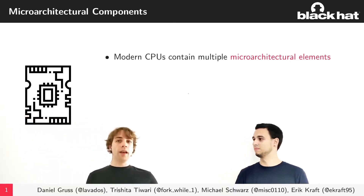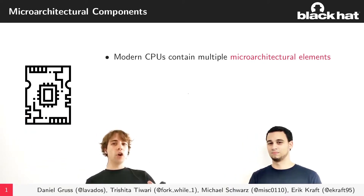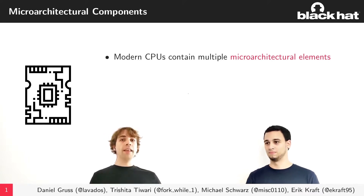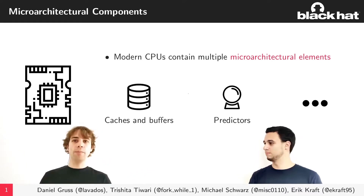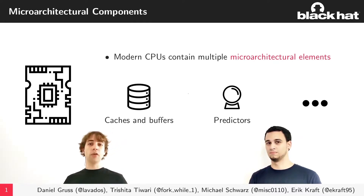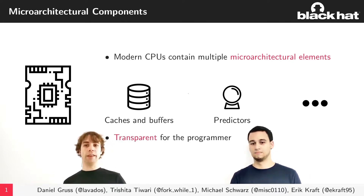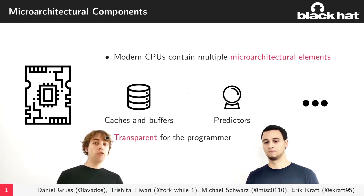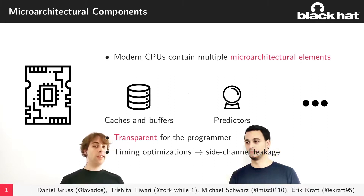We want to talk about the micro-architecture today. Micro-architecture components are components of the processor which are not defined in the architecture, but they still exist and behave differently depending on the processor. You can have different caches, buffers, and predictors in different CPUs. All these micro-architectural elements have behavior that you can observe, but their exact behavior is not documented in the architecture specification. This is meant to be transparent for the programmer, but the timing optimizations lead to side channel leakage.